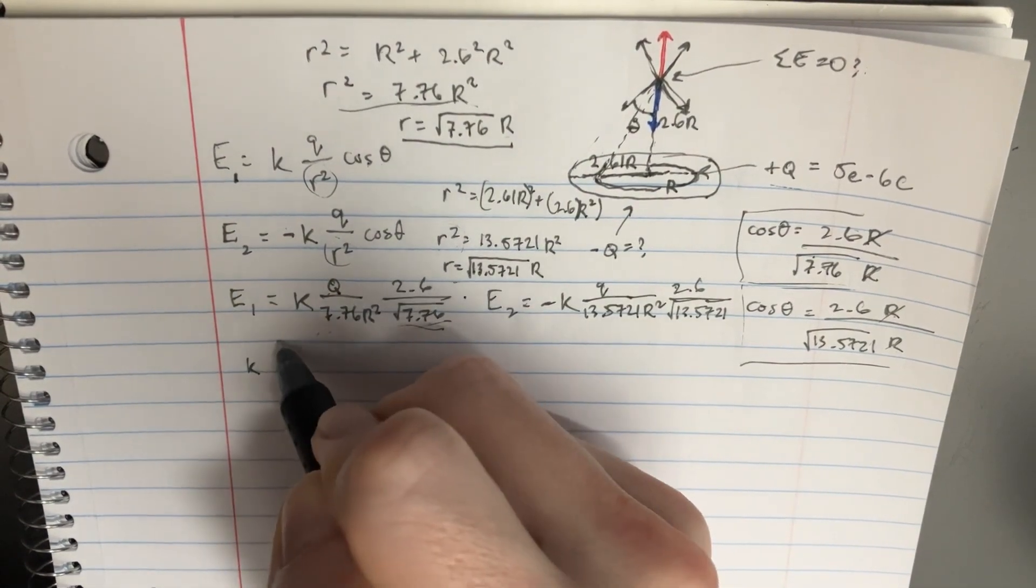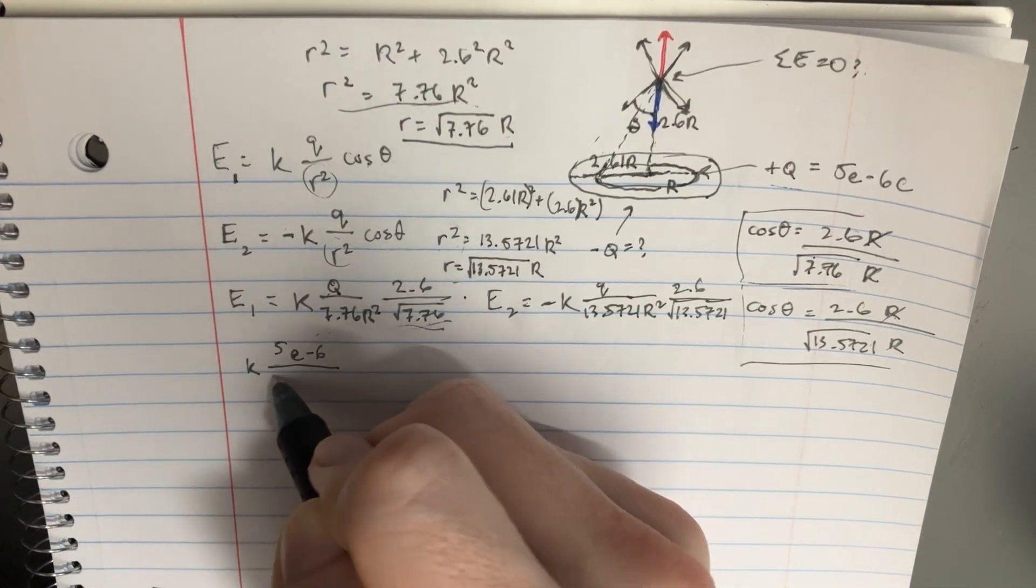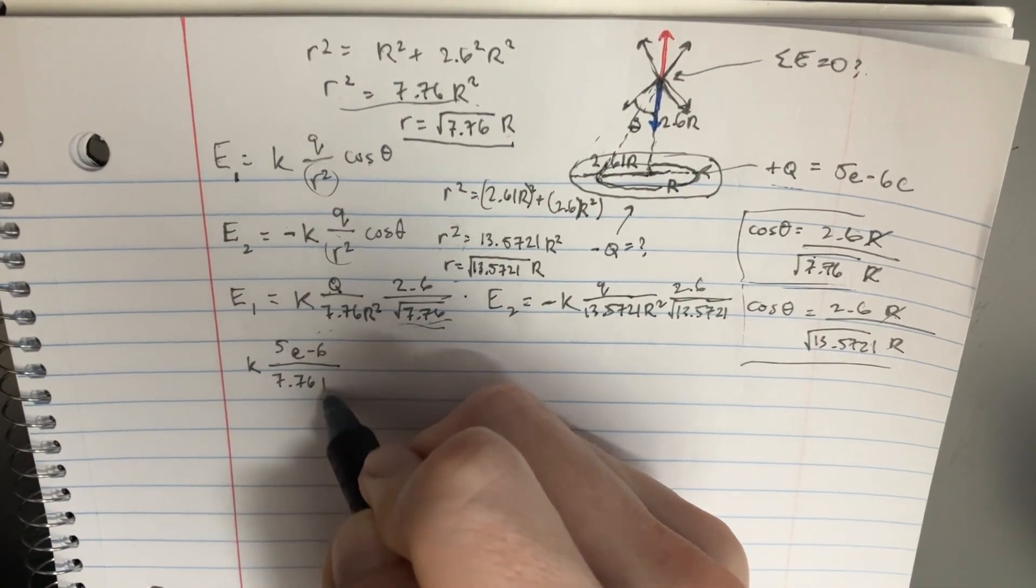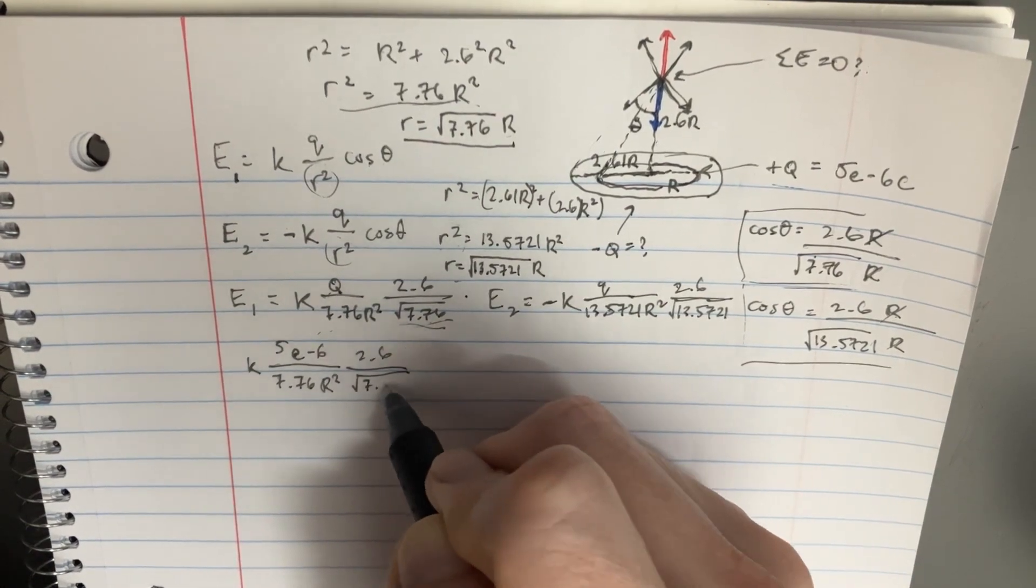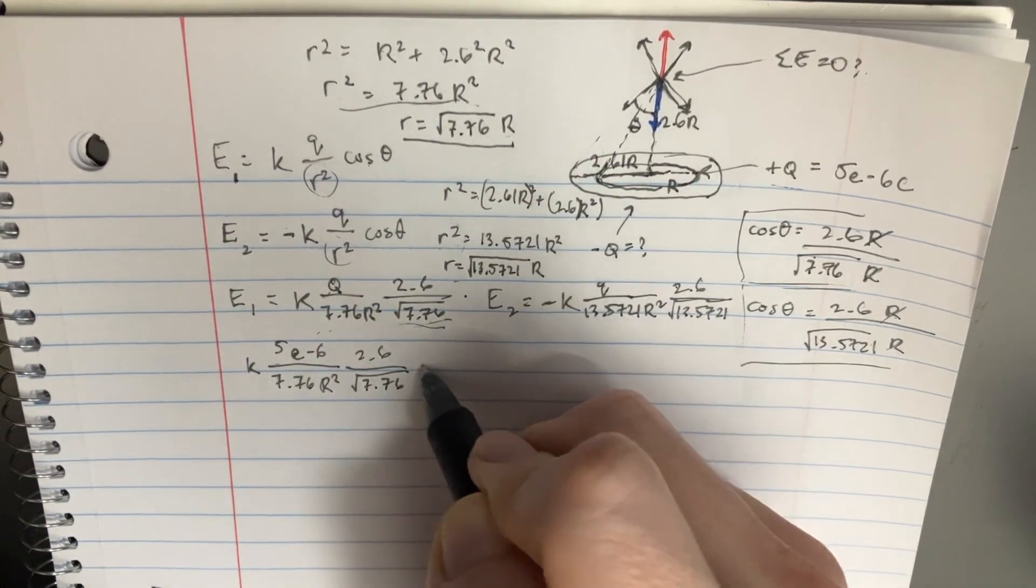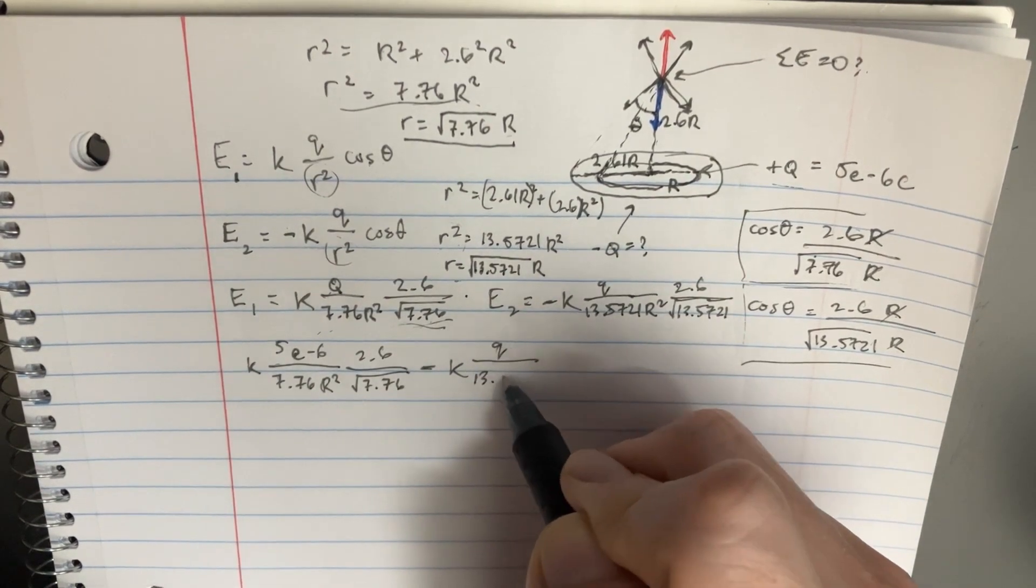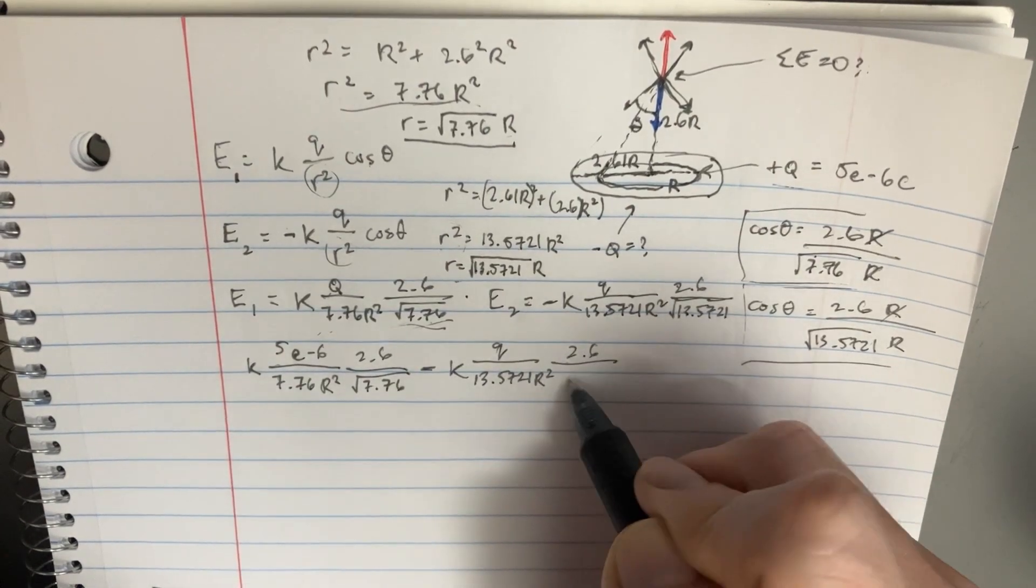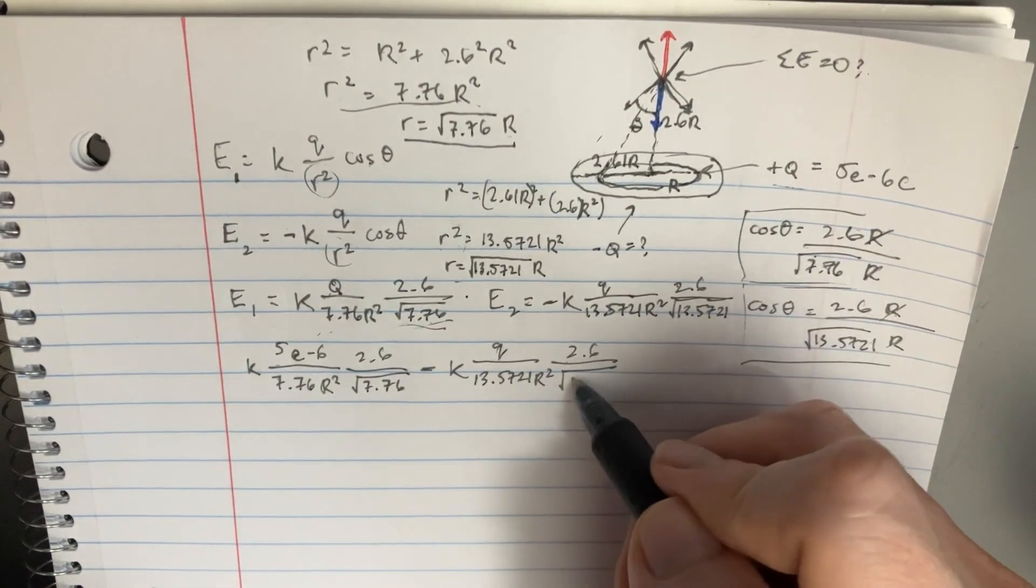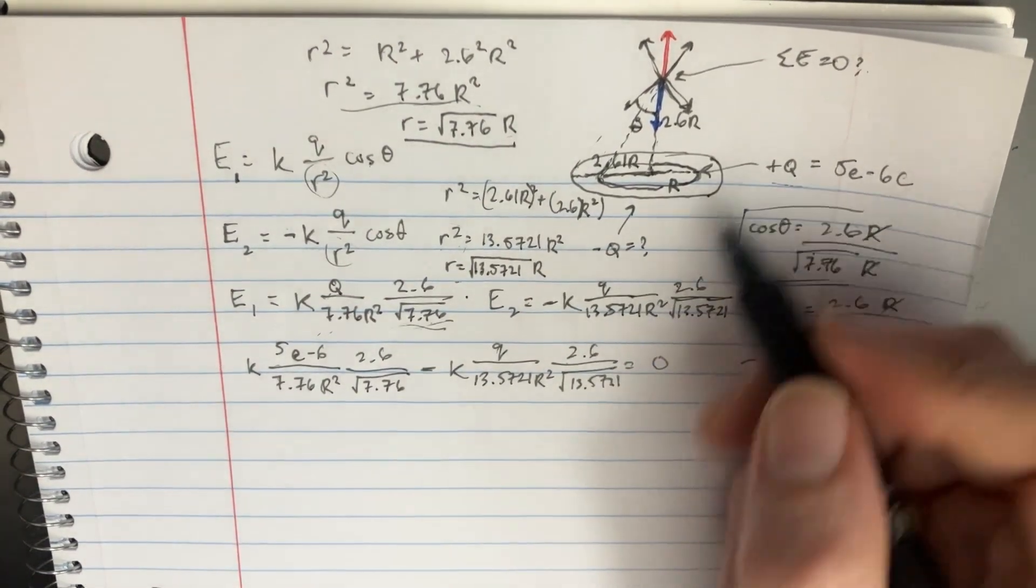So k, and then we'll plug in 5e to the negative 6 divided by 7.76 r squared, 2.6 divided by 7.76, and we're going to subtract the k q over 13.5721 r squared times 2.6 divided by the square root of 13.5721, and this is supposed to be equal to zero.